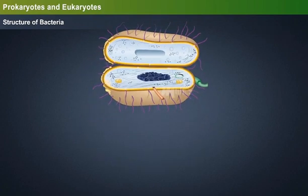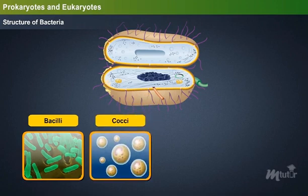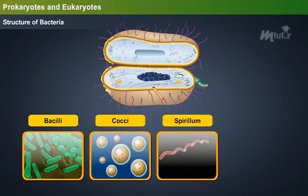Bacteria are found in different forms such as rod-shaped, for example bacilli; spherical shape, for example cocci; and spiral shape, for example spirillum.